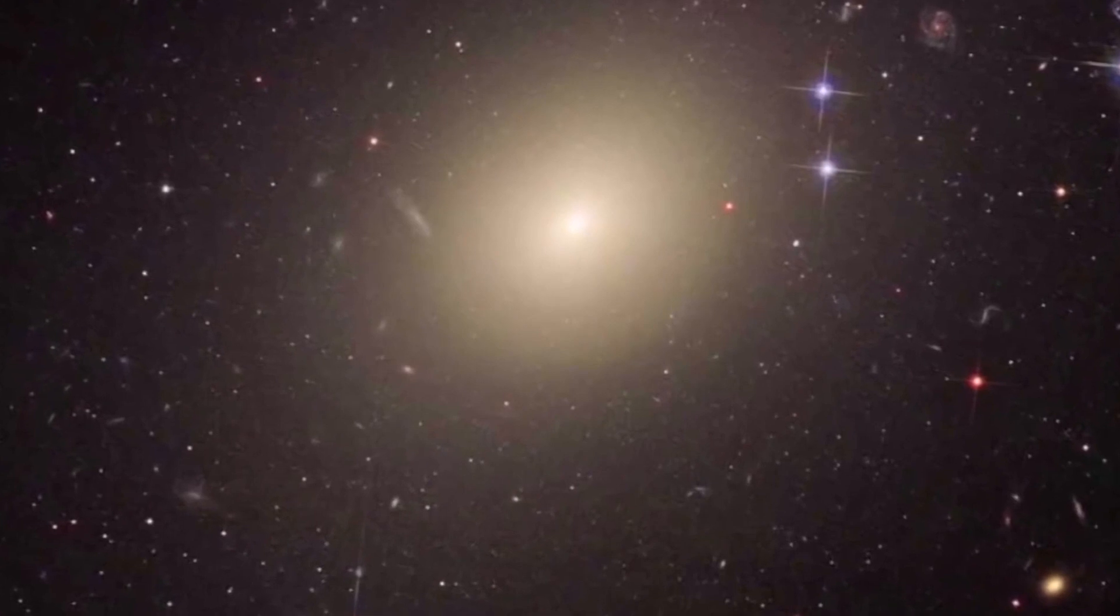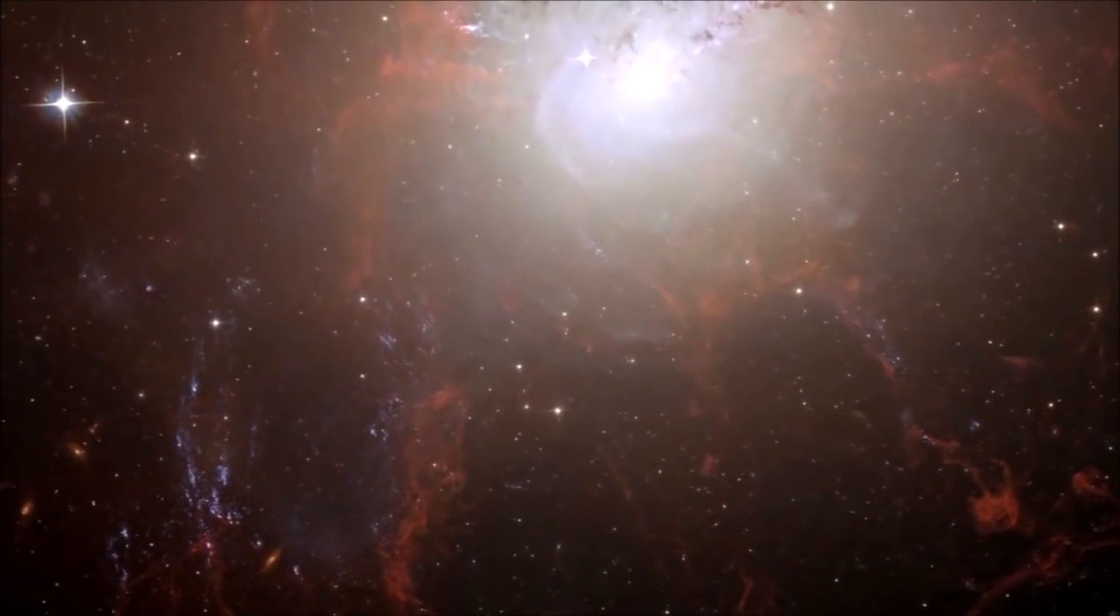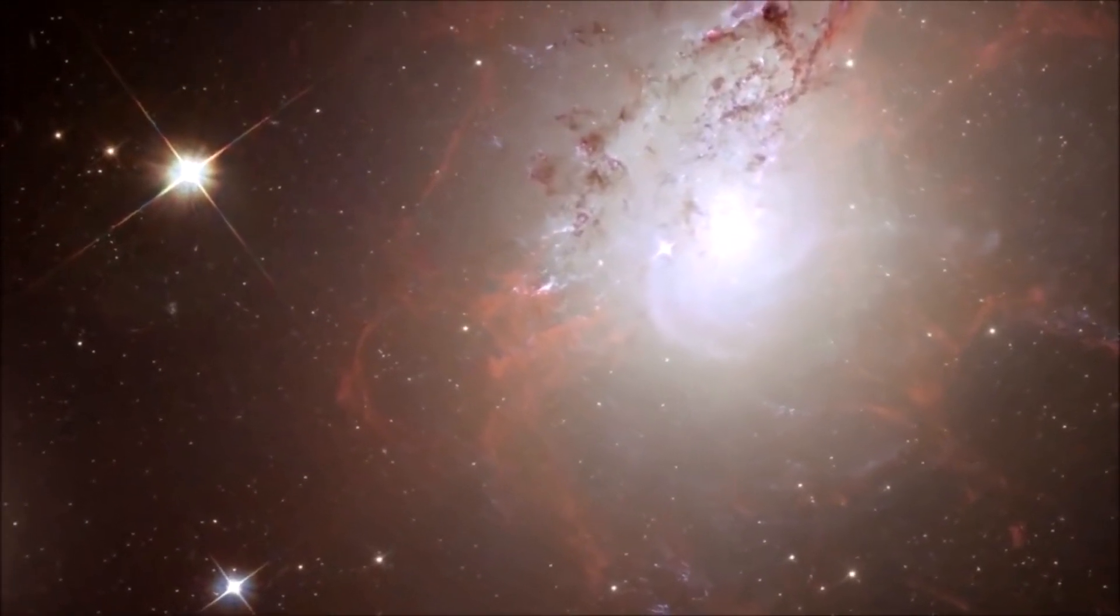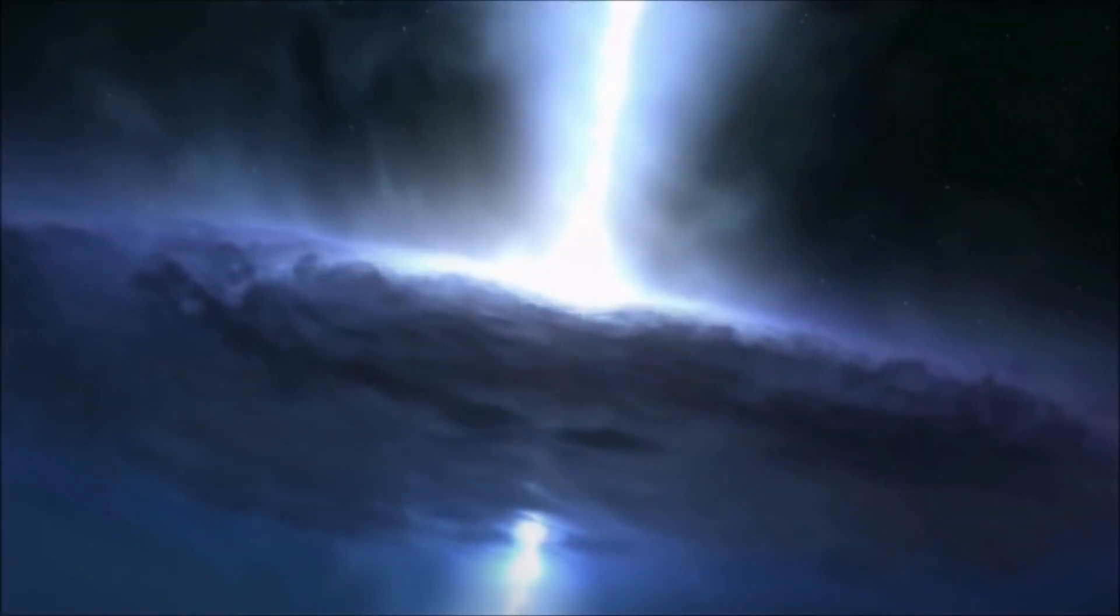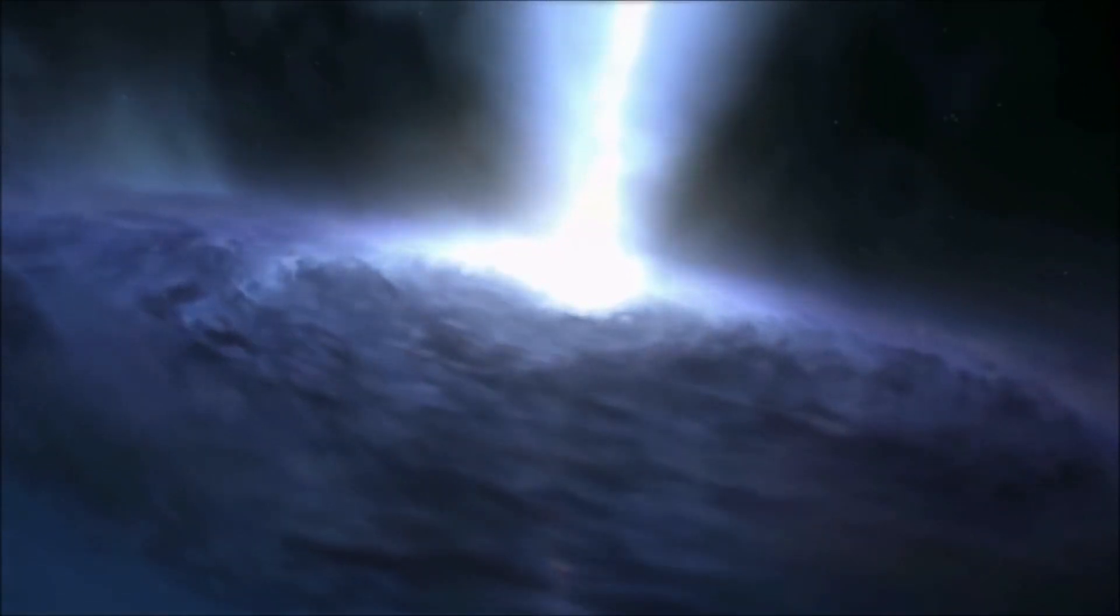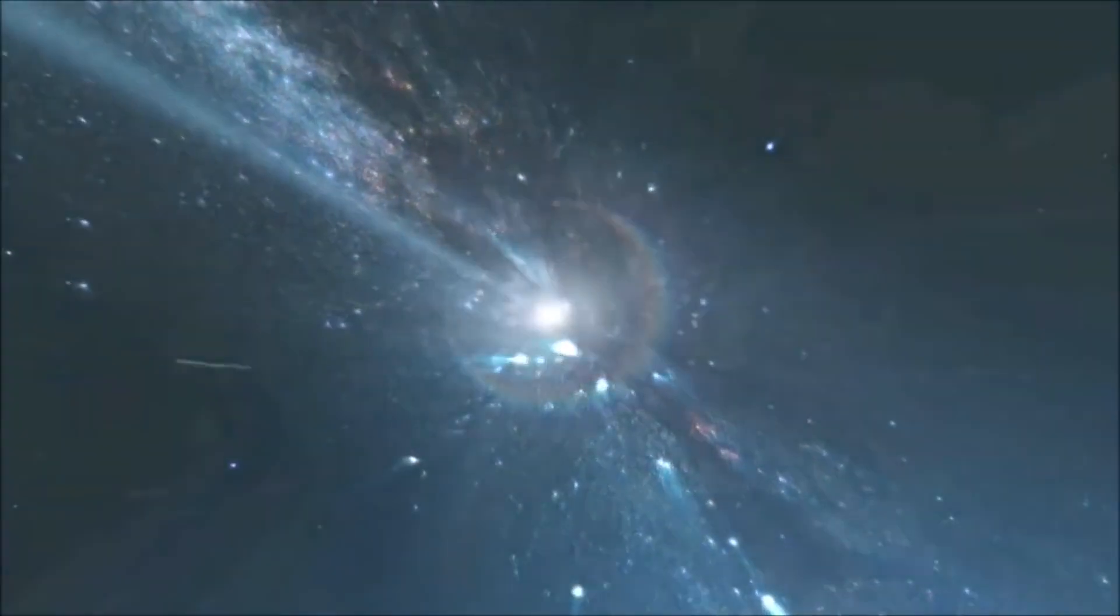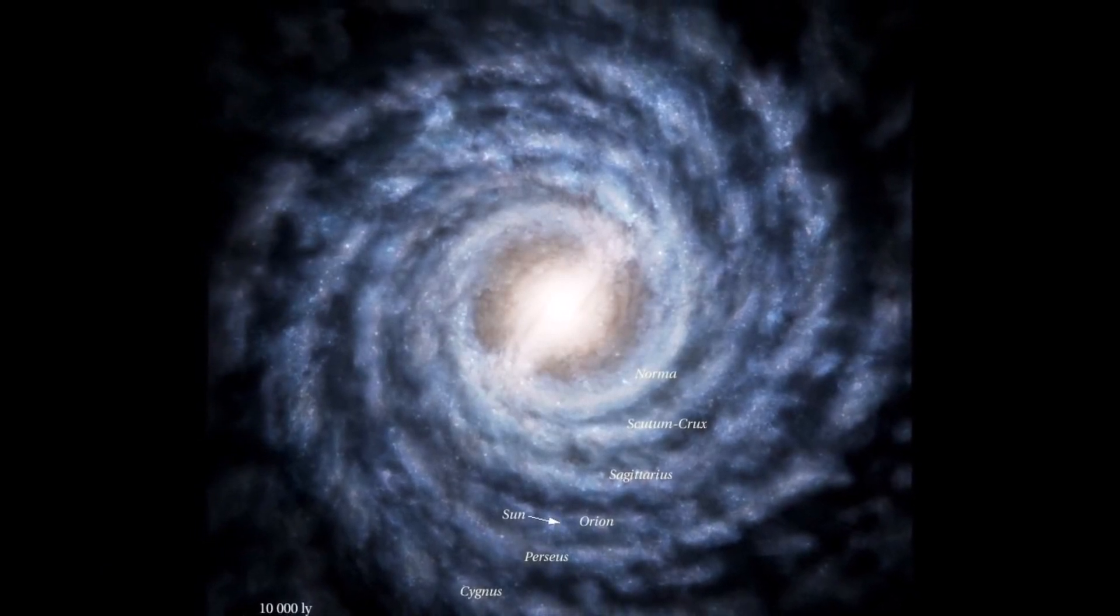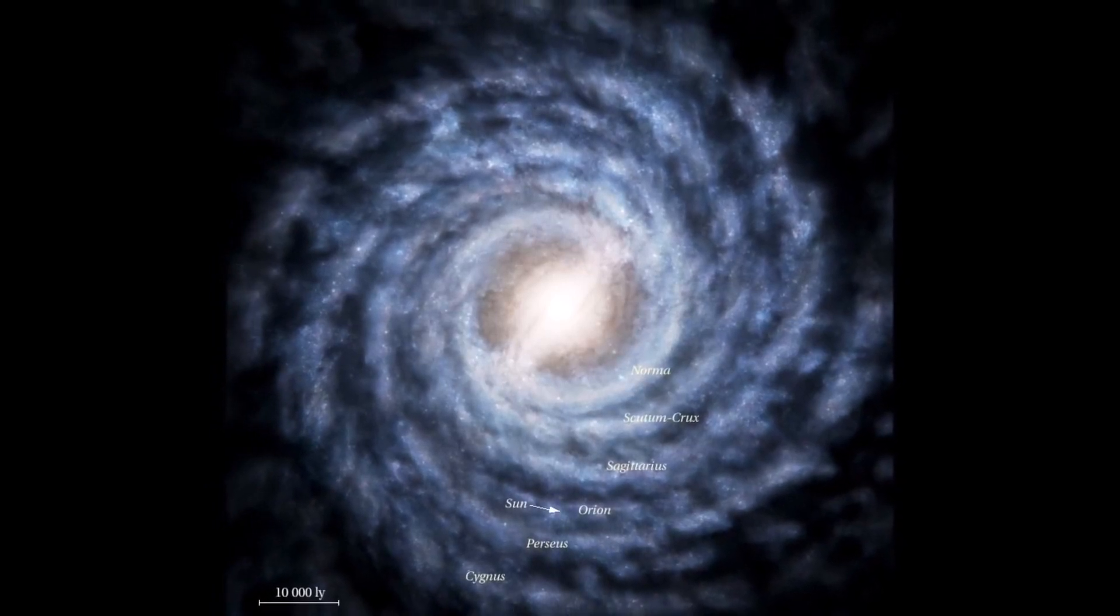However, GLASS-Z13 isn't the only distant galaxy that astronomers are reviewing. They're also inspecting a galaxy named GLASS-Z11, which is also a candidate for one of the earliest galaxies we've ever seen. Both of these galaxies are tiny in contrast to the galaxies we see today, such as our home galaxy, the Milky Way. The Milky Way is about 100,000 light-years in diameter. Compare that to GLASS-Z13 and GLASS-Z11, which are 1,600 and 2,300 light-years across, respectively.